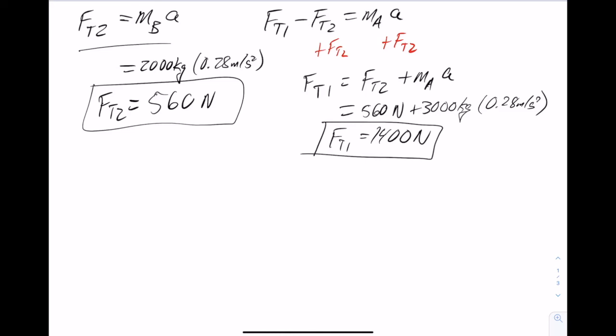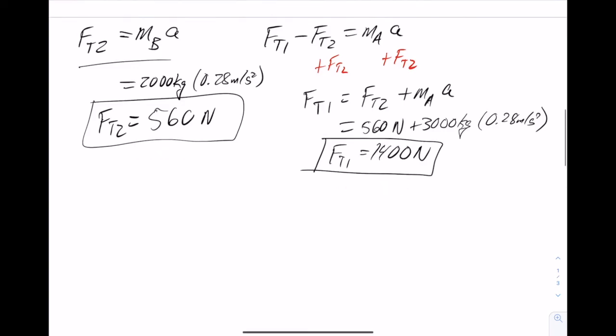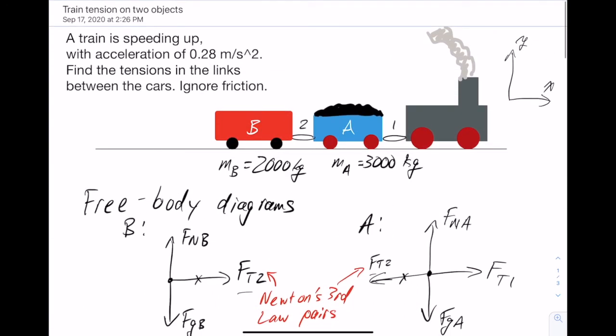Right there, so I've solved for both unknowns. Now we can see that the tension is not the same between the two. And you can think of that if you go back to the picture and you say, well, the locomotive then must be pulling on the cars with a force of 1,400 newtons. But that force of tension 1 has to pull both the cars. The force of tension 2 only has to pull the second car. So it makes sense that that would be a smaller value.